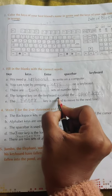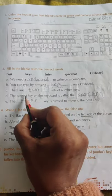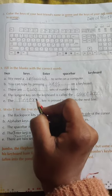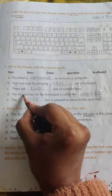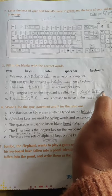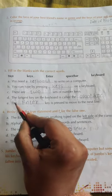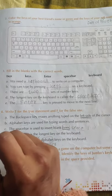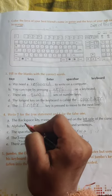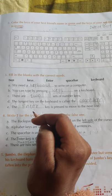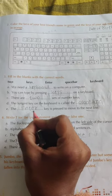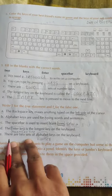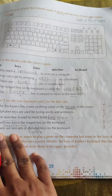The longest key on the keyboard is called the space bar key. Fifth blank: The enter key is pressed to move to the next line.